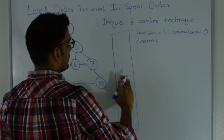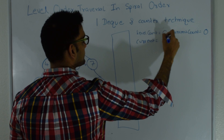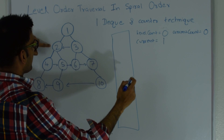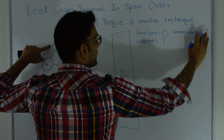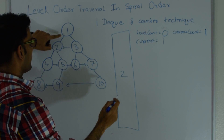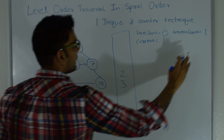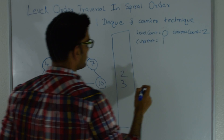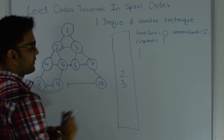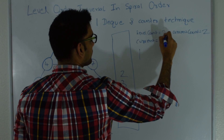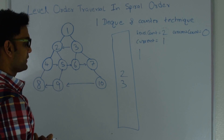I pop from the top — current becomes 1. I decrement level count to 0. If 1 has a left child I add it from the bottom and increment current count to 1. If 1 has a right child I add it from the bottom and increment current count to 2, then print 1. As soon as level count becomes 0, I take the current count value: level count becomes 2, current count becomes 0, and I start reading from the bottom of the queue.